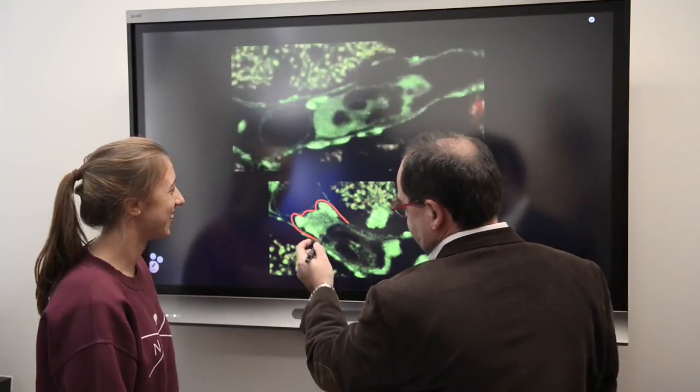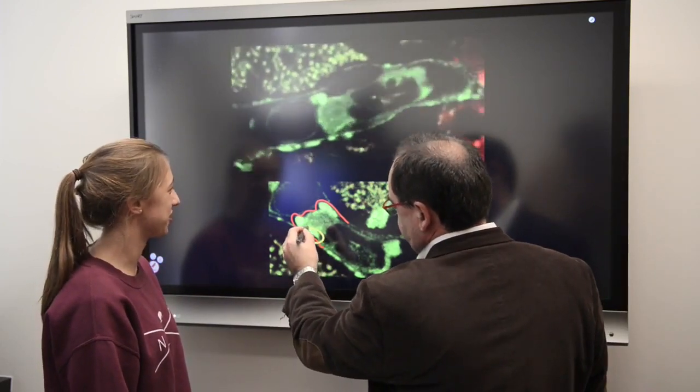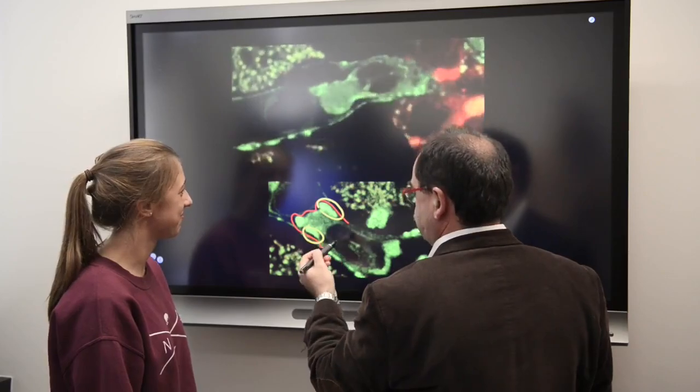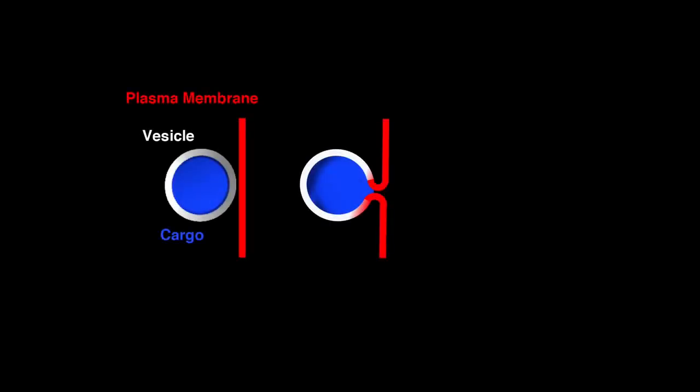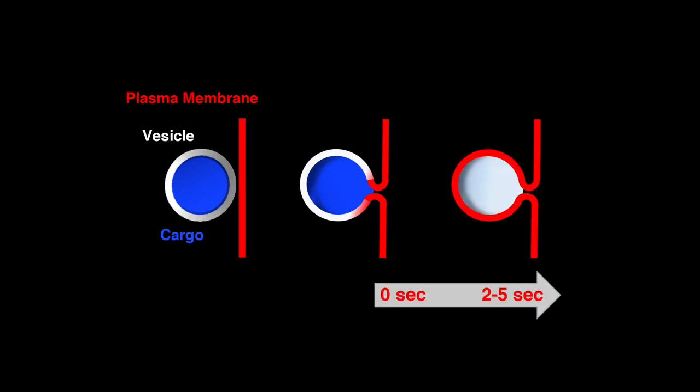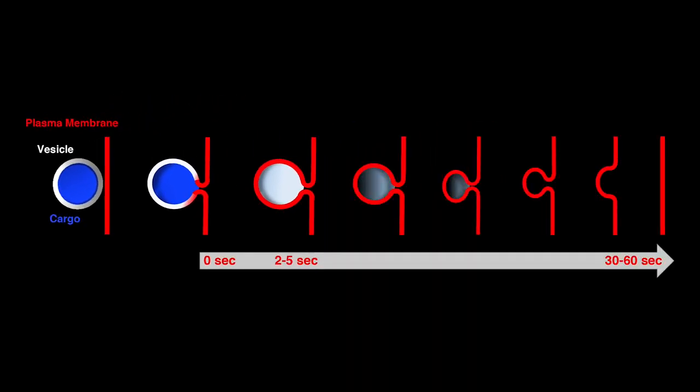When you eat, the pancreas and the salivary glands secrete all the enzymes that you need to digest food. These enzymes are stored in large vesicles that fuse with the plasma membrane. We found that after the enzymes are released outside the cells, the membranes of the vesicles are inserted and absorbed into the plasma membrane. We call this process integration.